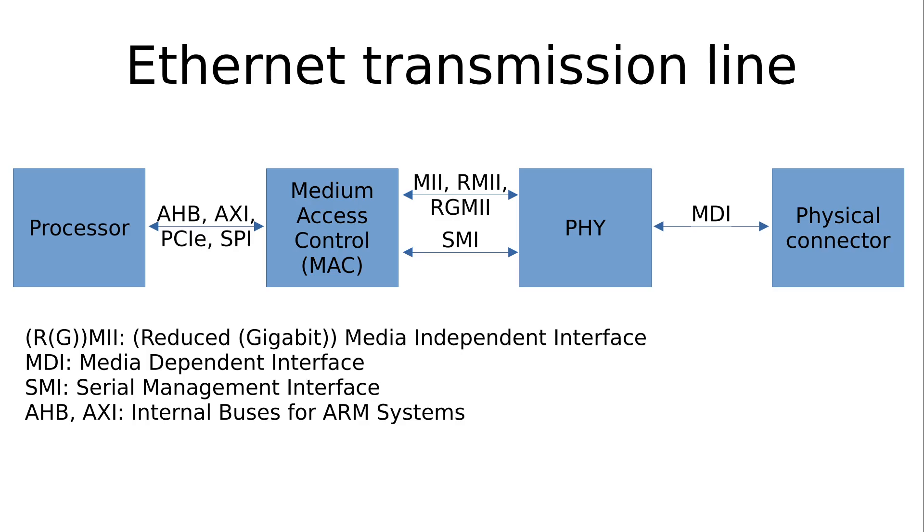Or you can read out information, for example if a link partner is connected to it and which speed was negotiated between the two connections. And these register blocks you can read and write over the serial management interface or SMI. We will take a closer look at the SMI in later videos of this series.